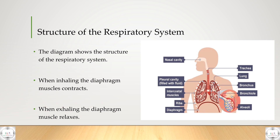The structure of the respiratory system — if you look on the right you'll see a diagram. This shows the structure starting with the nasal cavity, which is how we breathe, passing into the trachea. You can also see the lungs, the intercostal muscles which are our breathing muscles, and all the various parts that make up the respiratory system.